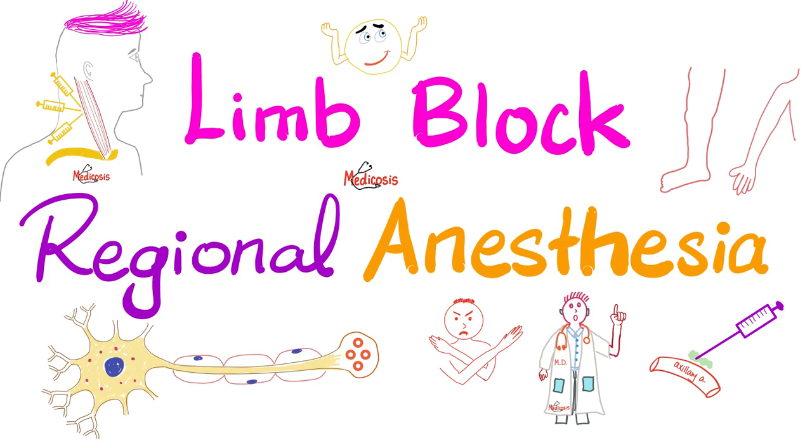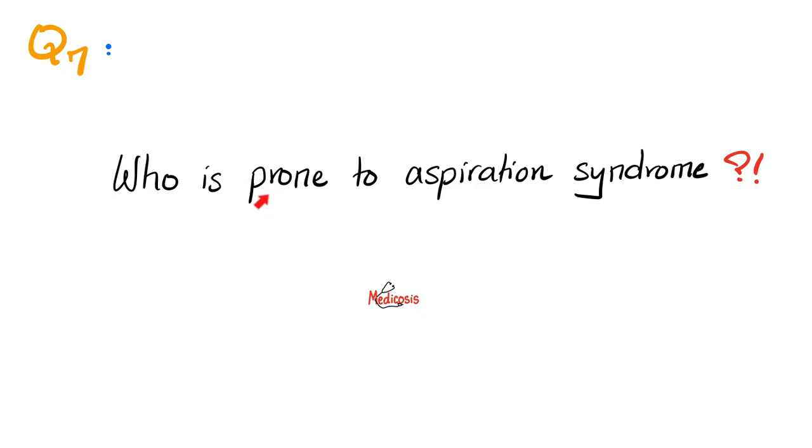Let's answer the question of the previous video: who is particularly prone to aspiration syndrome? And here's the answer: alcoholics, quadriplegics, this could be a spinal cord lesion, amyotrophic lateral sclerosis, or locked-in syndrome that you see when you have a basilar artery stroke. If I have a seizure disorder, if I am unconscious, or whenever my Glasgow coma scale drops below 8. The lower the score, the worse.